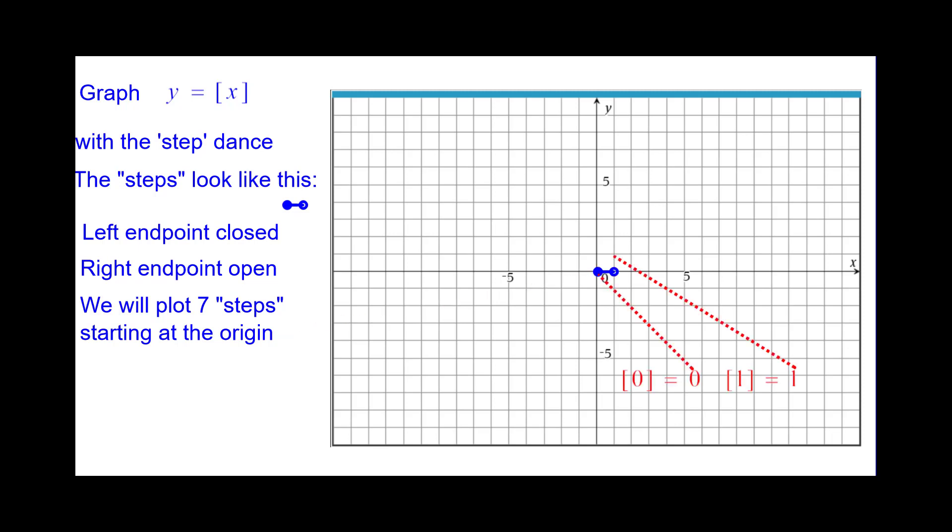Greatest integer of 0 is 0, while the greatest integer of 1 is 1. That's why it's closed there at 0 but open at 1, because it's going to jump up to the next step.